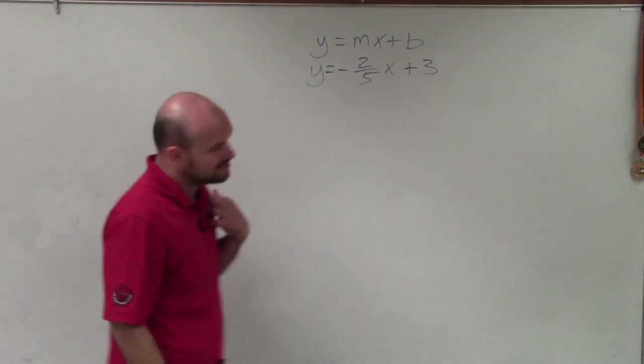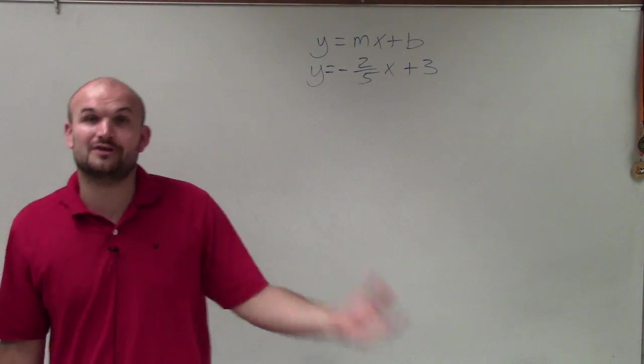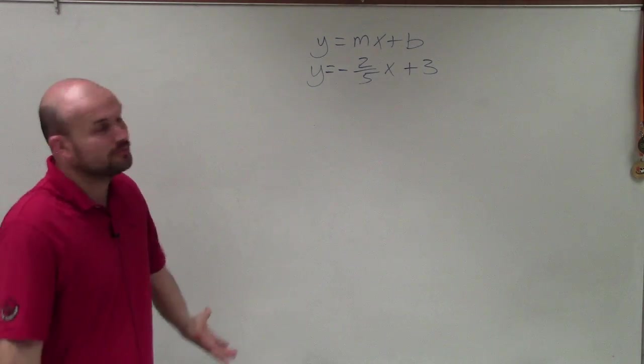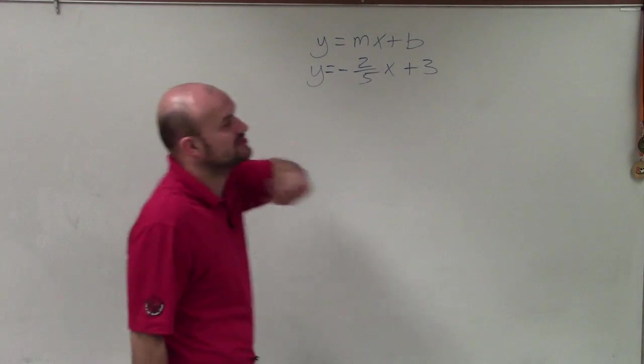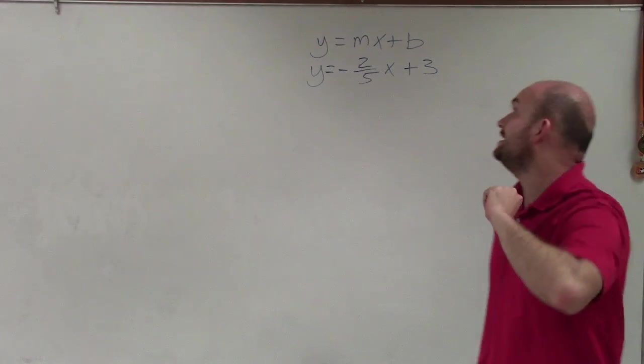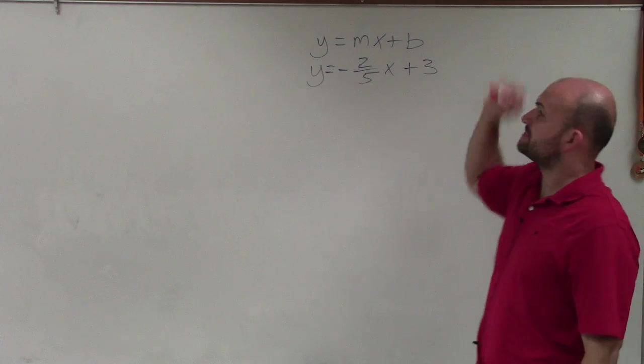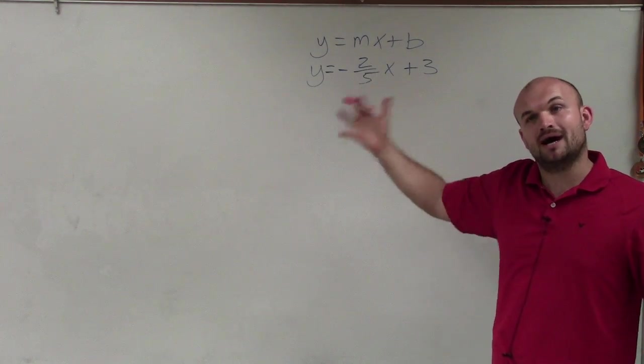Welcome. All right, so in this problem, what I'm asked to do is go ahead and graph my linear equation using slope-intercept form. You can see I have slope-intercept form written right up there, where y equals mx plus b, where m represents the slope and b represents the y-intercept.